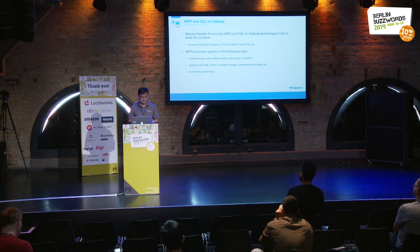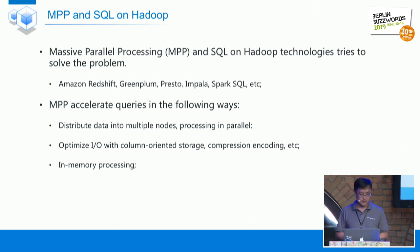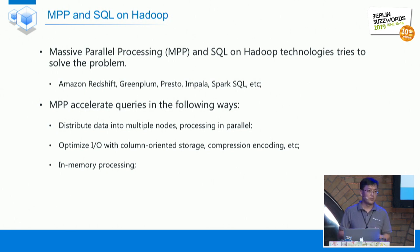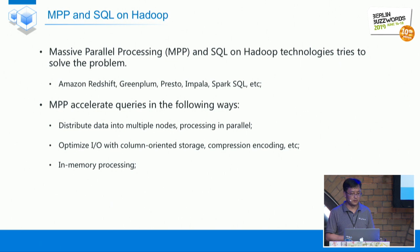They will distribute the data by certain rules to multi-nodes and then translate the SQL query to parallel processing to reduce the total latency. Another optimization is to convert the data into columnar format with some type of compression. And also, in order to improve the performance, they will cache the data in memory as much as possible. The total architecture has many bottlenecks such as memory, CPU, and network I/O.